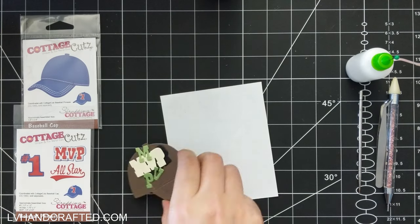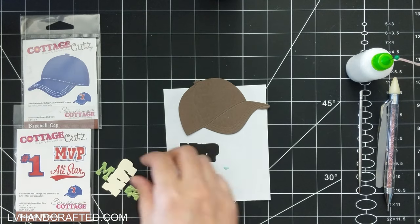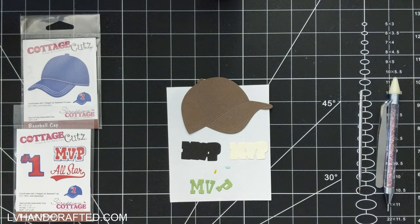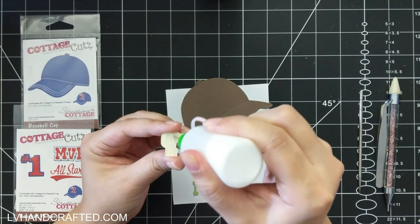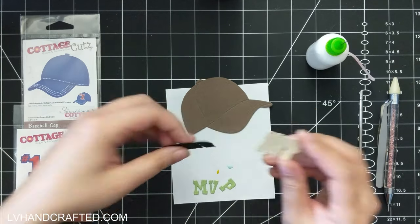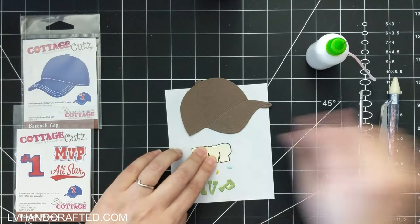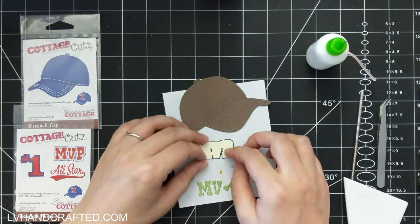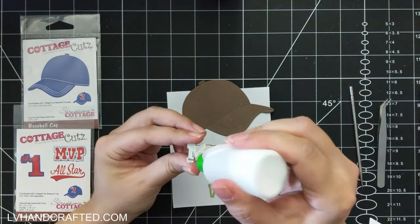Hi and welcome to my channel. My name is Lynn and today I'm going to be using some products from the latest release from Cottage Cuts called Baseball and Golf, and I'm going to make a Joyfold card.